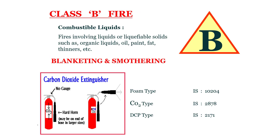Class B fire — combustible liquids: fire involving liquids or liquefiable solids such as organic liquids, oil, paints, fat, thinner, etc. To extinguish this Class B fire, blanketing and smothering is recommended — mainly by disconnecting the oxygen. Carbon dioxide extinguishers are used. Foam type IS 10204, CO2 type IS 2878, and DCP type IS 2171 are recommended for extinguishing Class B fire.